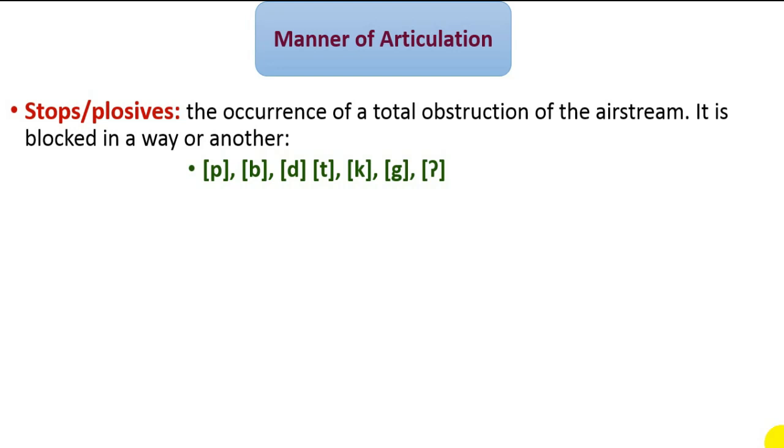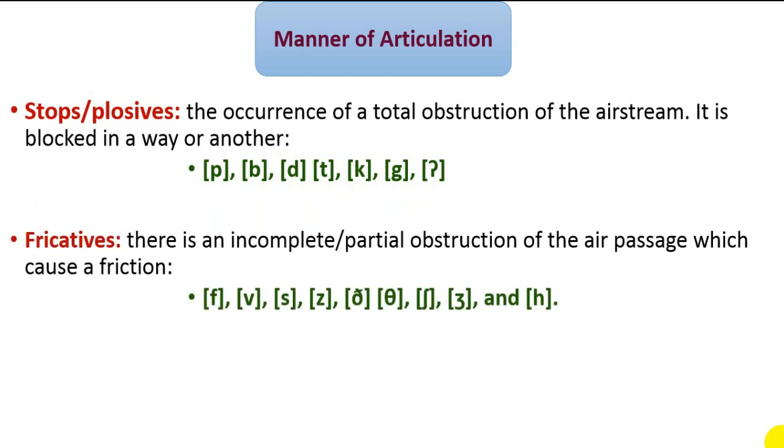Fricatives: the manner of articulation feature that describes sounds which are made with incomplete or partial block of the air passage, which allows it to escape through a narrow opening, causing friction. Such fricatives are: the voiced and voiceless TH sounds, F, V, S, Z, SH, ZH, and H.